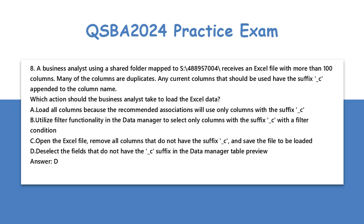Question 8: A business analyst using a shared folder receives an Excel file with more than 100 columns. Many of the columns are duplicates. The current columns that should be used have the suffix underscore C appended to the column name. Which action should the business analyst take to load the Excel data?